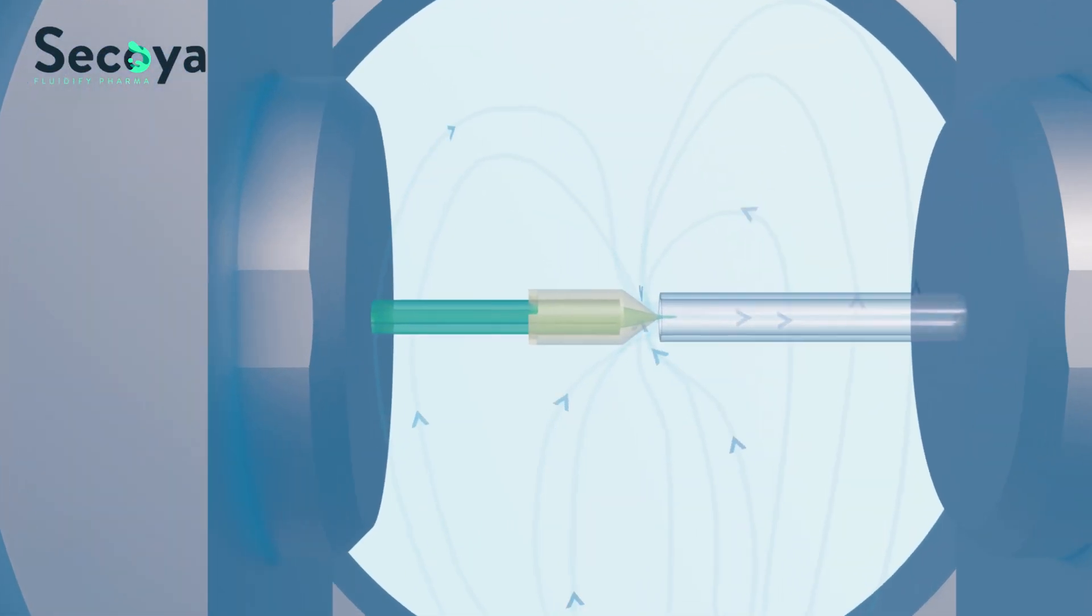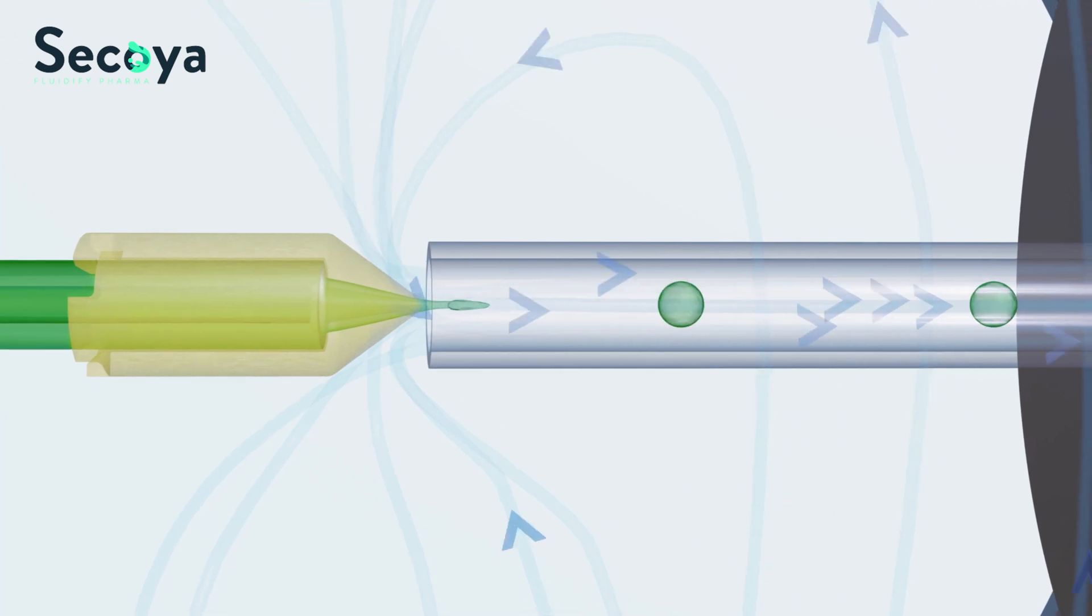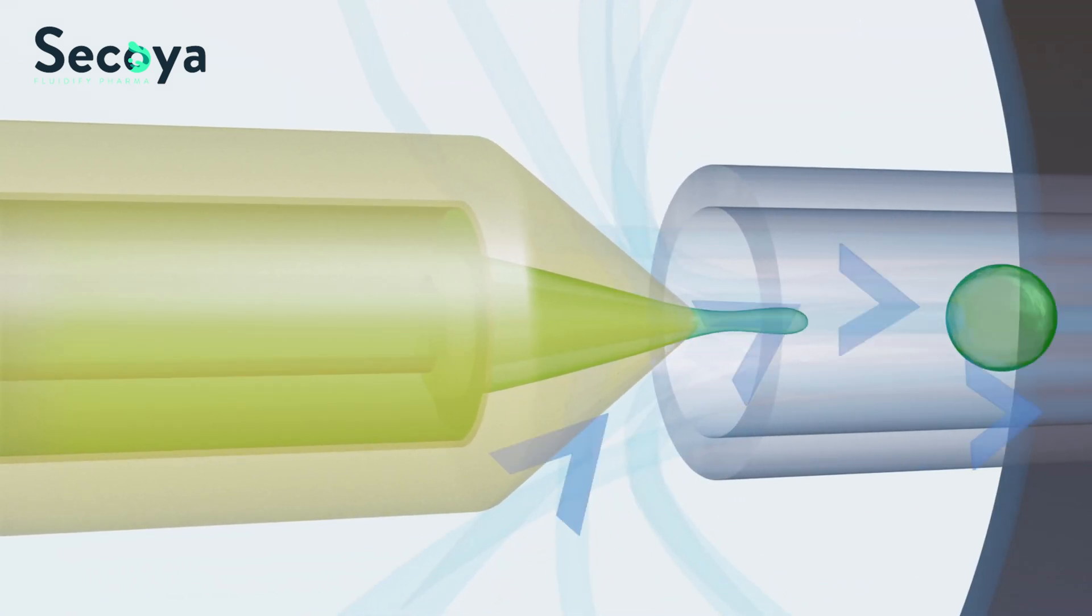At the entrance of the output capillary, the continuous phase is subject to a dramatic acceleration due to the change of section. This leads to a squeezing of the droplet phase flowing out of the nozzle, resulting in the formation of droplets.